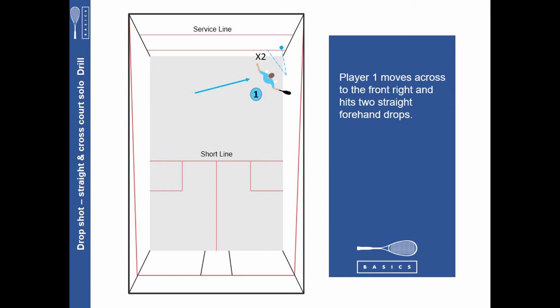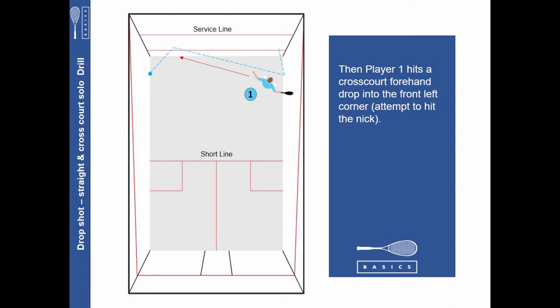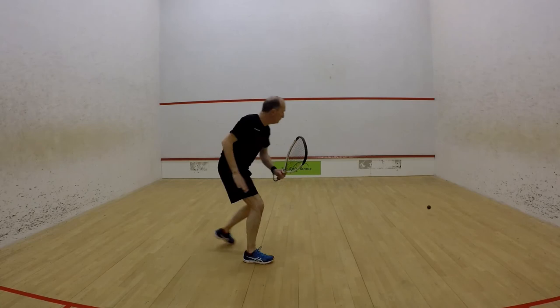Player one moves across to the front right and hits two straight forehand drops. Then player one hits a cross court forehand drop into the front left corner, attempting to hit the nick.